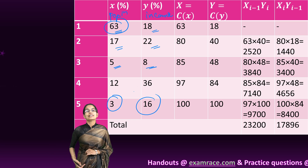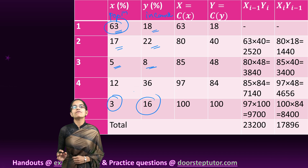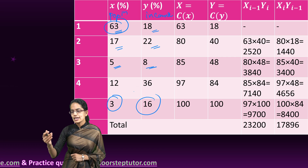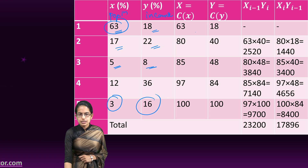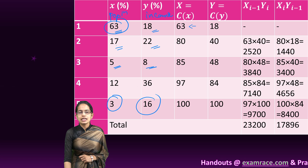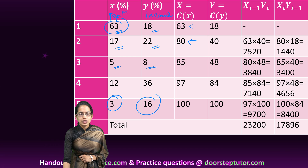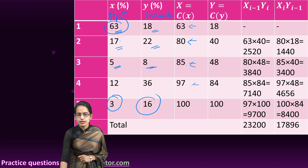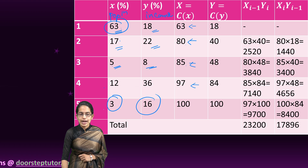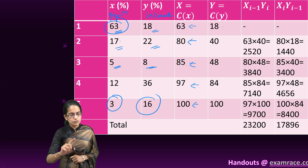How do we calculate the Gini coefficient? We simply find the cumulative frequencies. For the population: the first case is 63; next, 63 plus 17 gives 80; then 80 plus 5 gives 85; add another 12 to get 97; add another 3 to get 100. For the cumulative percentage of income: first case is 18; 18 plus 22 gives 40; 40 plus 8 gives 48; 48 plus 36 gives 84; 84 plus 16 gives 100.